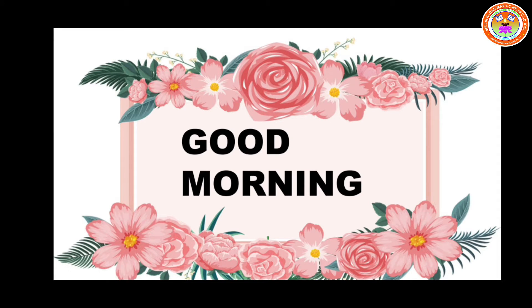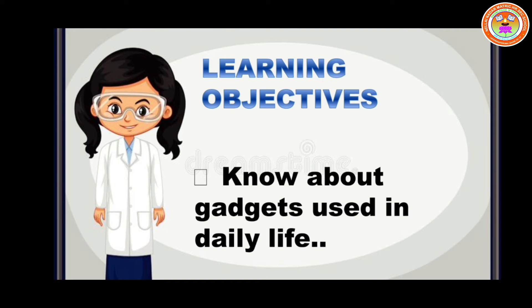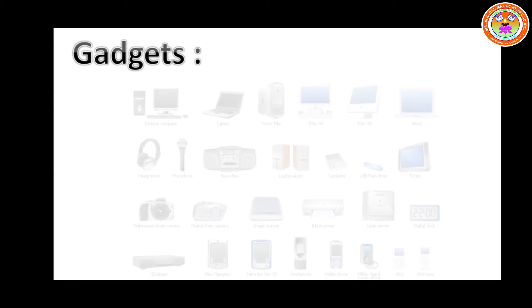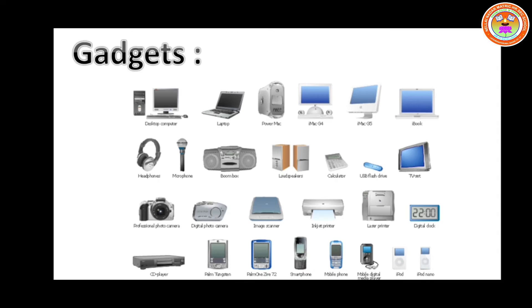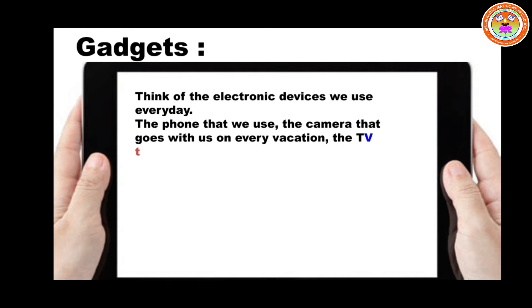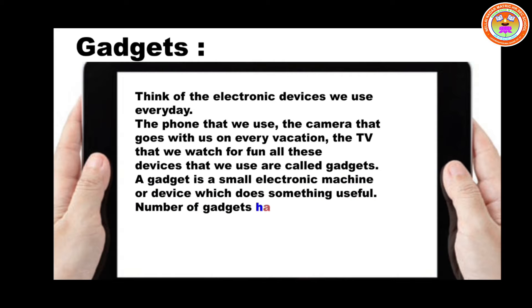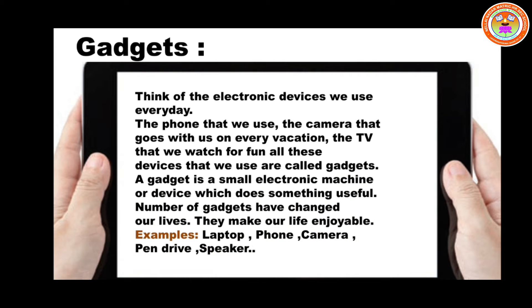Hello children, today I'm going to take you to know about gadgets used in daily life. You can see the different types of gadgets. What is meant by gadget? A gadget is a small electronic device which does something useful. Nowadays we can use the different types of gadgets.